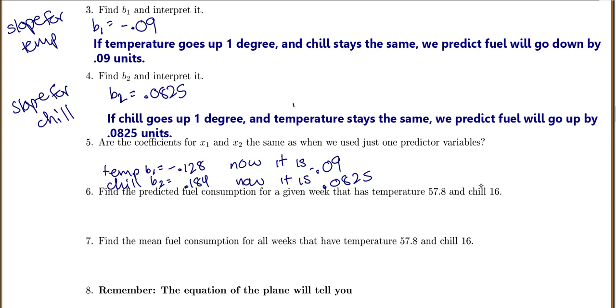Now, though we've done that, the next thing to learn is how to predict our fuel consumption. So remember, our predicted fuel, let's look at our equation again. So our equation again is fuel equals 13.1087 minus 0.09 times temperature, plus 0.0825 times chill. So we'll just plug in temperature equals 57.8 and chill equals 16.